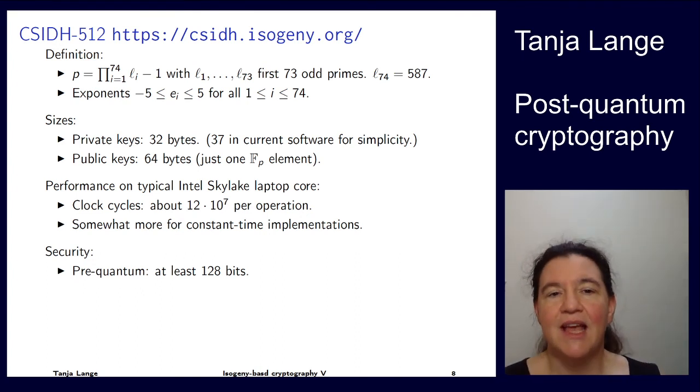We have 74 places each of those having a range between minus five and five, so 11 choices that can be squeezed into 32 bytes. The public key is just one element of the finite field, so 64 bytes, so if p is 512 bits that's 64 bytes. It's reasonably fast. This is something that you won't really notice when you do an execution, but this is not production quality, this is not a constant-time implementation.